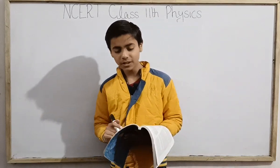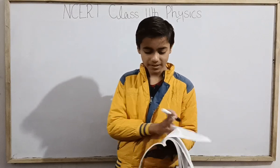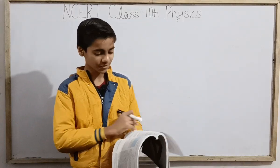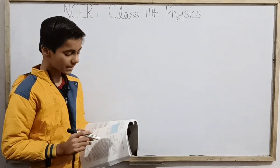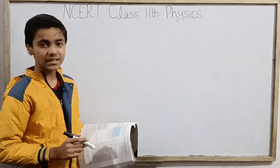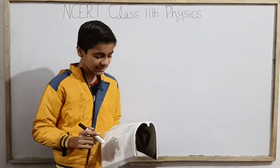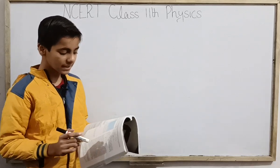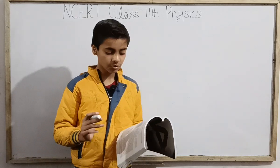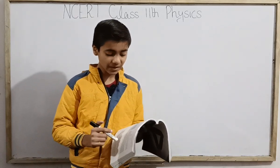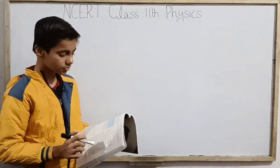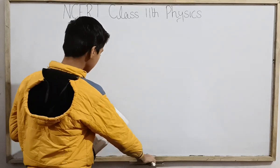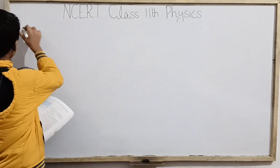Mass m of the block is 200 grams, k equals 90 newton per meter, and the damping constant b is 40 gram per second. Calculate: (a) the period of oscillation, (b) the time taken for its amplitude of vibrations to drop to half of its initial value, and (c) the time taken for its mechanical energy to drop to half of its initial value.